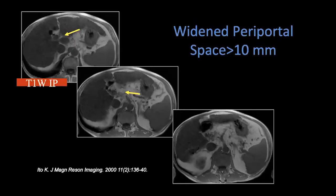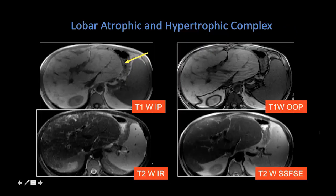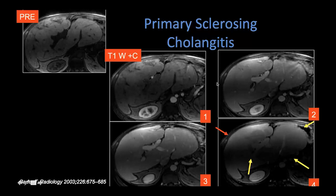Other features that one may see is widening of the periportal space by greater than 10 millimeters. One may also see the entire changes of lobar atrophic and hypertrophic complexes — here we have massive enlargement of the caudate lobe but relatively atrophic changes of the remainder of the liver. After infusion of contrast, this central hypertrophy is very classic in patients with sclerosing cholangitis or other biliary types of cirrhosis. The hypertrophic atrophic changes can be very helpful.